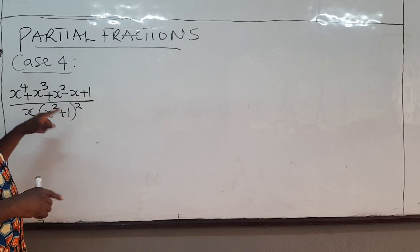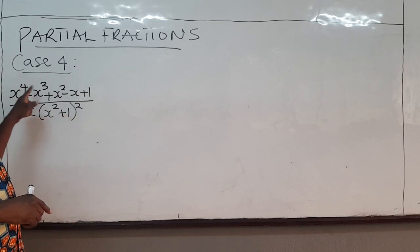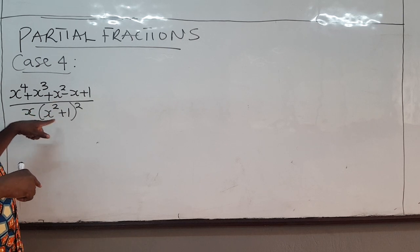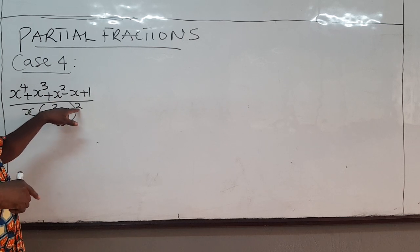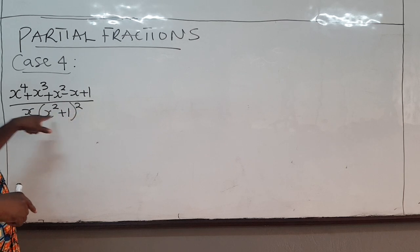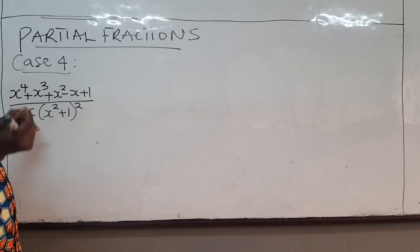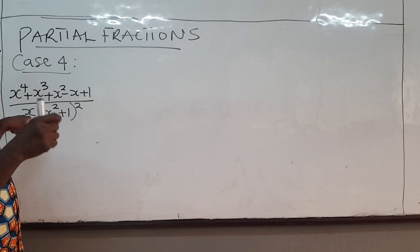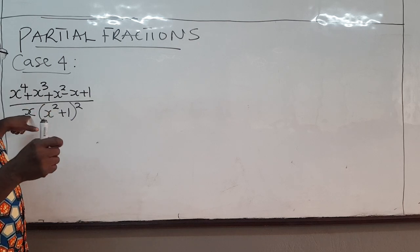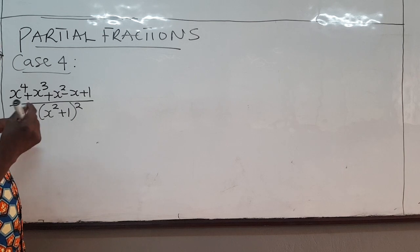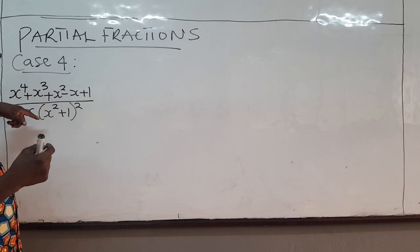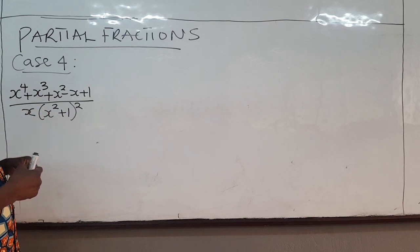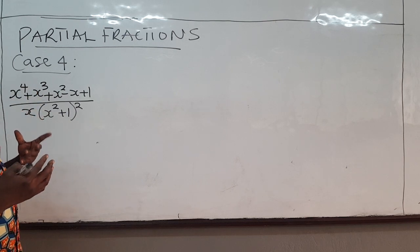Notice that the degree of the numerator is less than the degree of the denominator. This has degree 5 — x squared raised to the power 2 is x to the power 4, times x gives x to the power 5. In the next example on partial fractions, you must make sure the degree of the numerator is always less than that of the denominator; otherwise, you have to use long division.